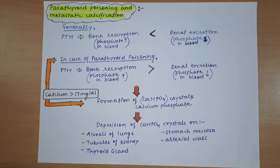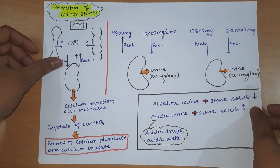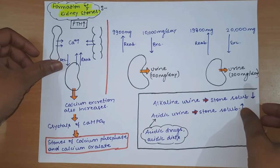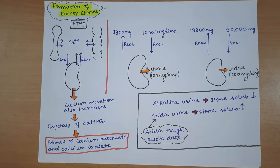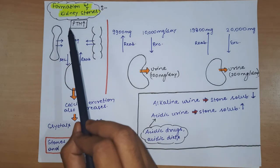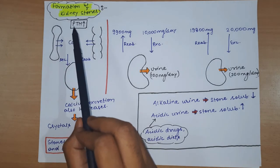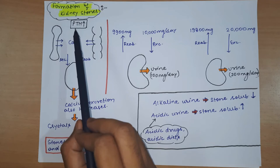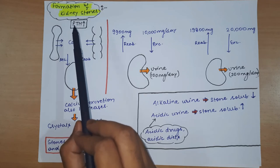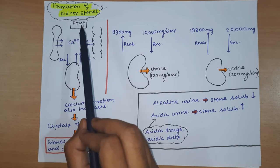The fourth effect is the formation of kidney stones. Kidney stone formation also occurs in the case of hyperparathyroidism - this happens because parathyroid hormone is increased in hyperparathyroidism.